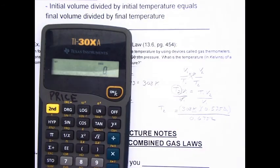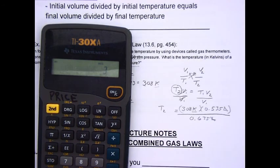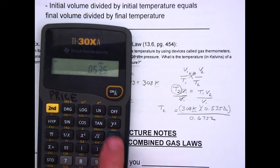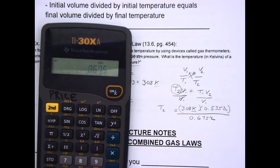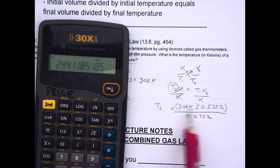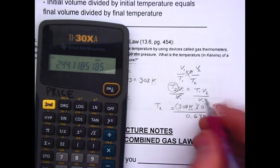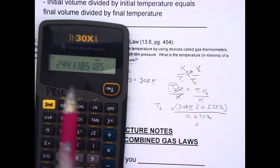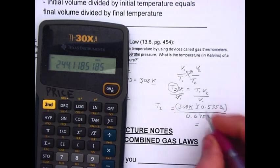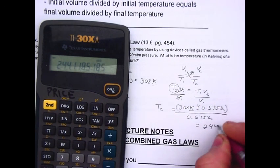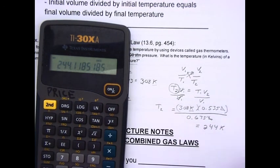Now, for the calculations, I go 308 times 0.535 divided by 0.675 equals. Since all these have three significant figures, I know my answer needs to be rounded off to three significant figures. And the answer becomes 244 Kelvin.